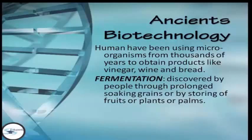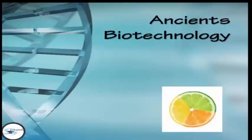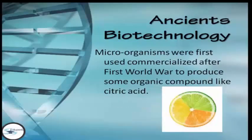Fermentation was discovered by people through prolonged soaking of grains or by storing fruits, plants, or palms. The first product resulting from this process was alcohol. Microorganisms were first used commercially after the First World War to produce organic compounds like citric acid, which comes from fruits like orange, dalandan, and lemon.